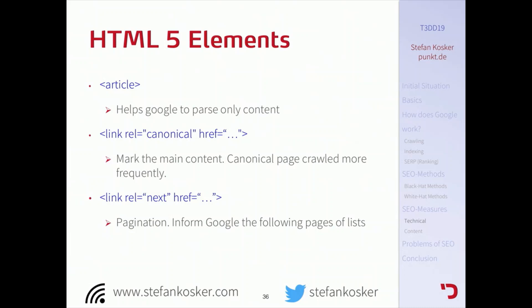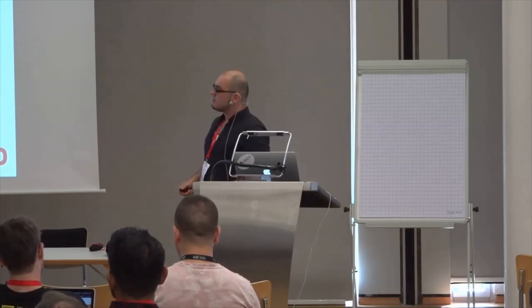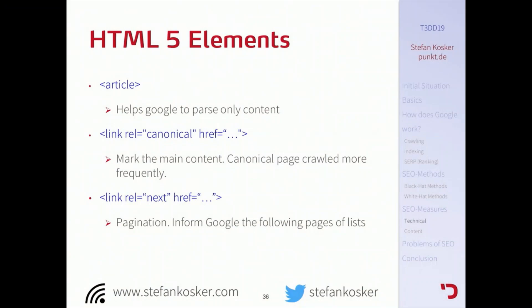The HTML5 article element tells Google where the most important part of your page is, so Google focuses its crawling on that article part and doesn't waste resources crawling the rest, meaning it visits your page more often. The canonical tag tells Google that you have the same content somewhere else — it can even point to itself. If you don't use canonical and Google finds duplicate content, it starts punishing you for stealing content. But if 95% of your page is canonical, Google says this page has no value at all. Try to be as original as possible, and use canonical when you do have duplicate content.